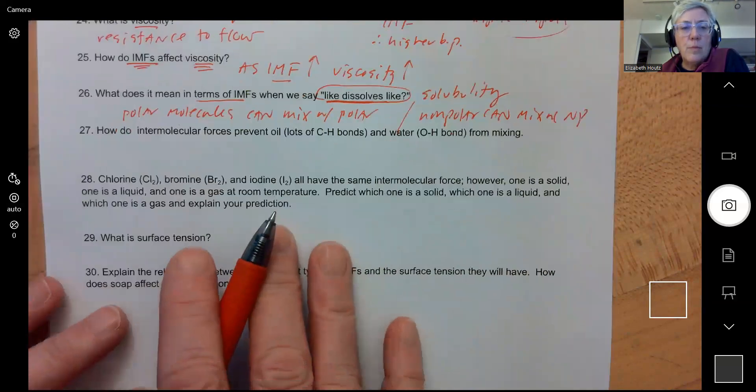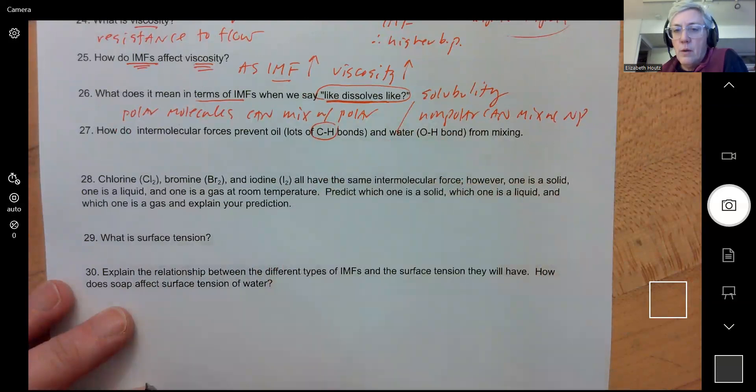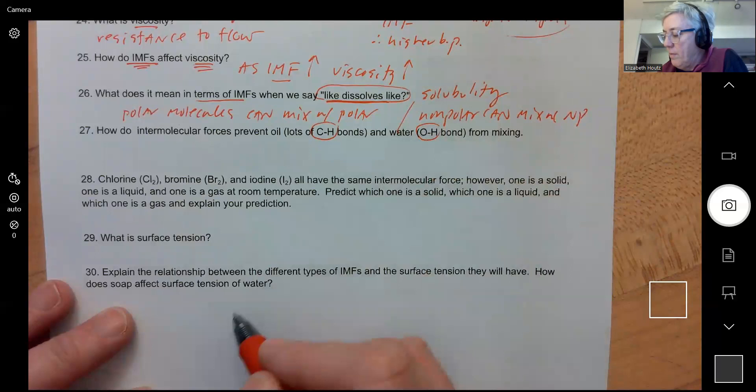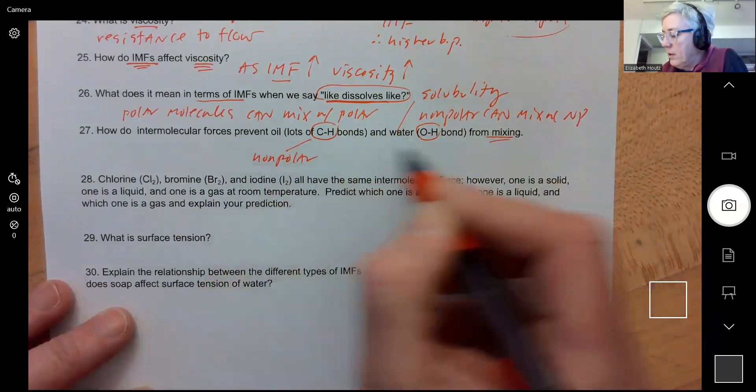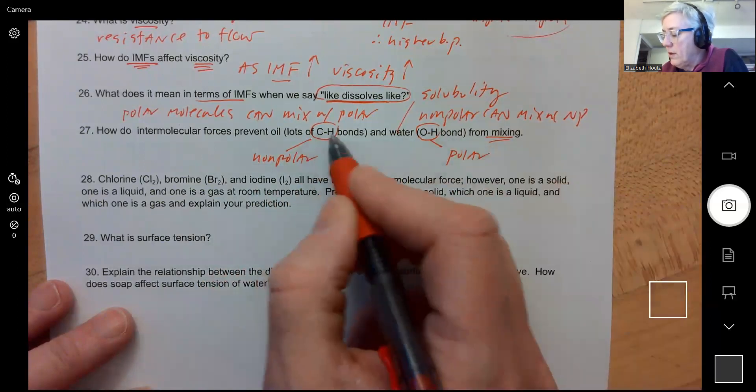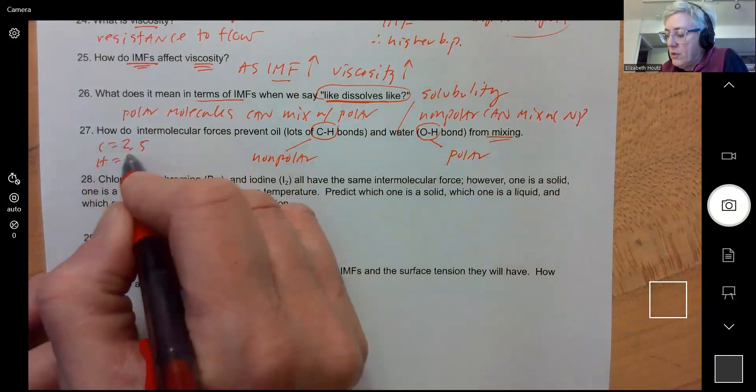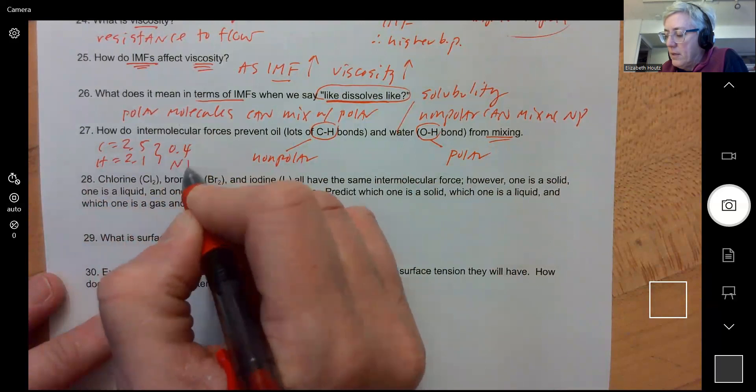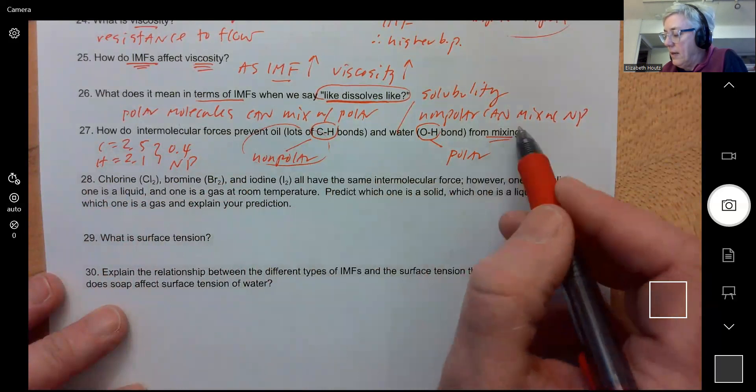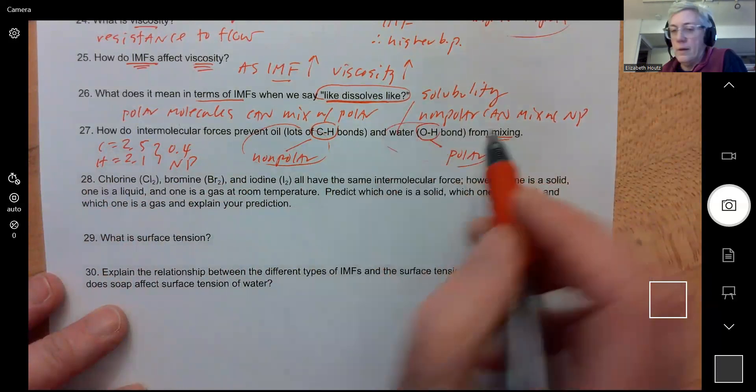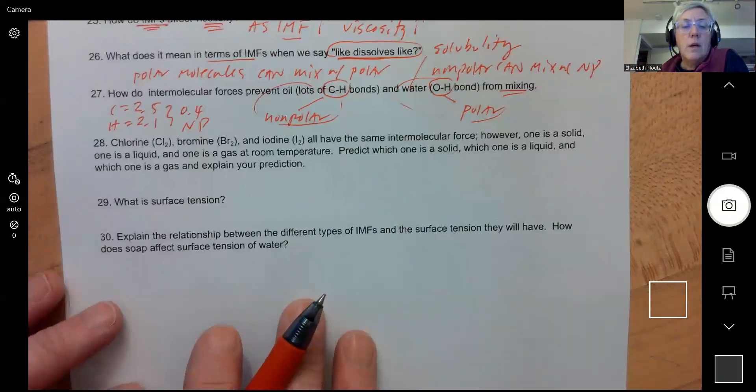Question 27: How do intermolecular forces prevent oil with lots of carbon hydrogen bonds and water with an OH bond from mixing? Well, CH bonds are very non-polar. OH bonds are very polar. If you did the electronegativity thing, C is 2.5, H is 2.1. That bond is non-polar. So non-polar oil is not like polar water. So the intermolecular forces are different and it keeps them from mixing.